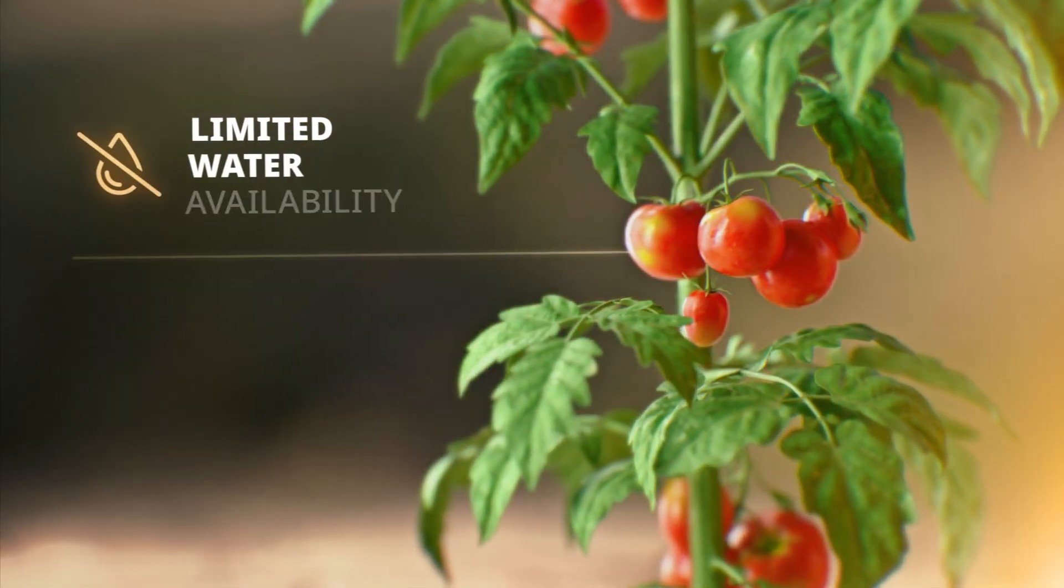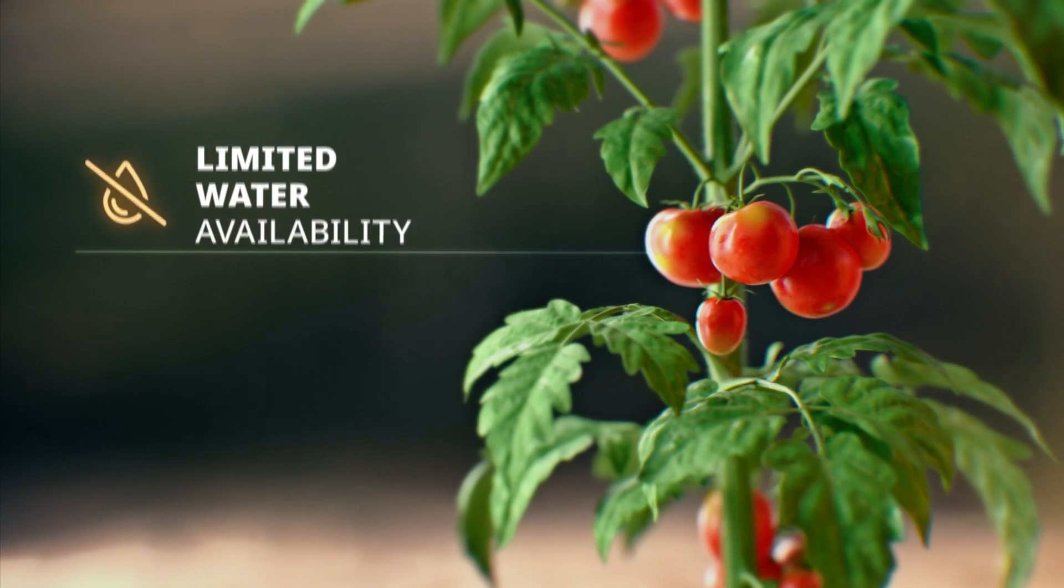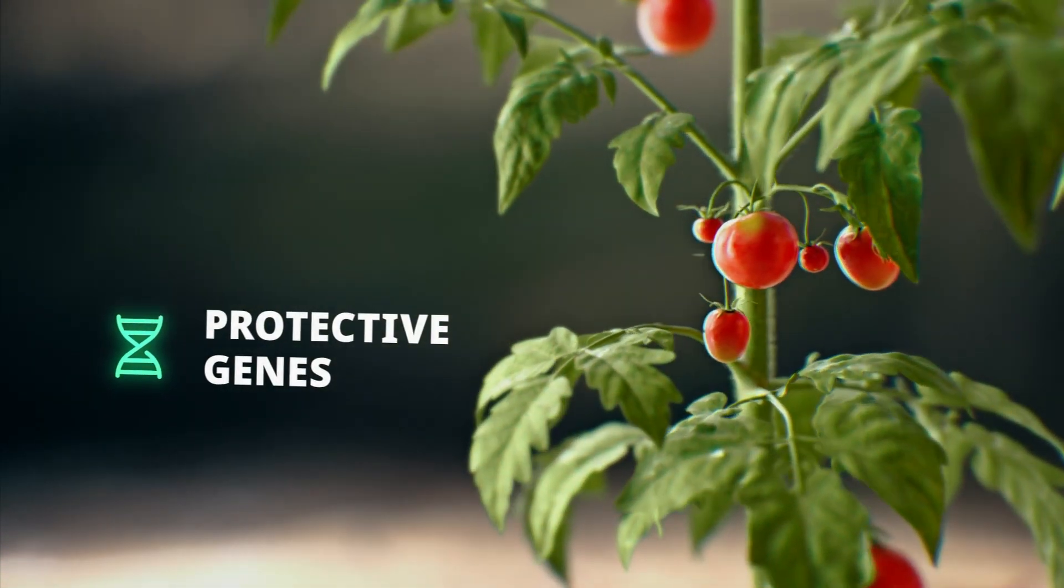Plants react to limited water availability by turning on protective genes to prevent cell damage, which can harm the overall crop yield.